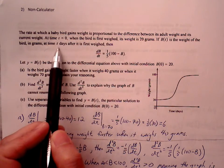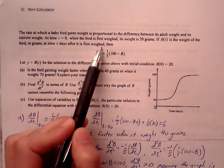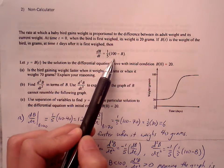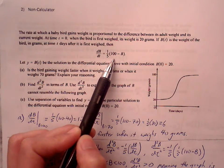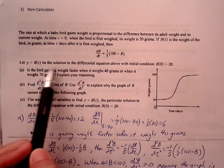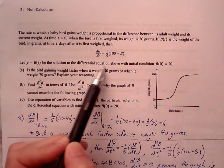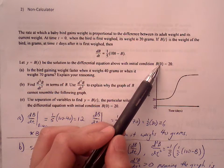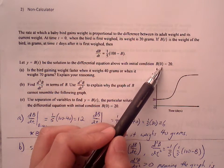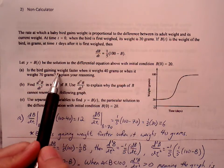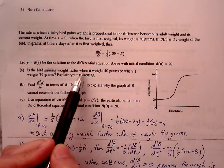If B(t) is the weight of the bird in grams at time t days after its first weight, then it follows this differential equation. Let y equals B(t) be the solution to the differential equation above with the initial condition B(0) equals 20 grams.